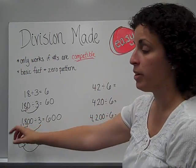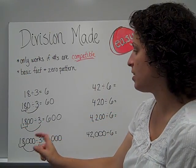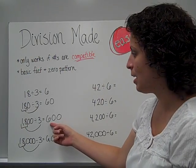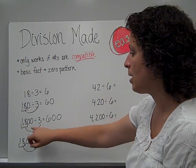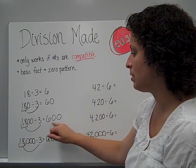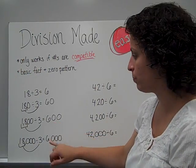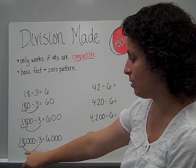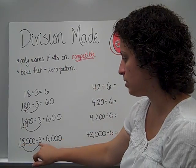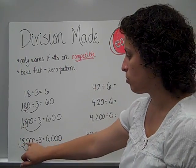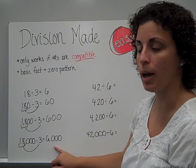1,800, there's still 18 at the beginning of that number, so 18 divided by 3 is always 6. It's just in a different place this time, and I have two zeros behind, and so they get added to the quotient. 18,000. 18 at the beginning, divided by 3 is still 6. Three zeros at the end, three zeros at the end.